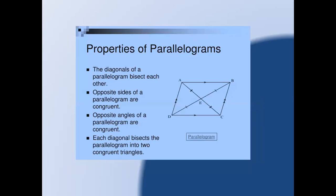Now look at the properties of parallelograms. First, the diagonals of a parallelogram bisect each other. Second, opposite sides of a parallelogram are congruent, meaning they are equal. Third, opposite angles of a parallelogram are congruent, meaning they are equal. Fourth, each diagonal bisects the parallelogram into two congruent triangles.